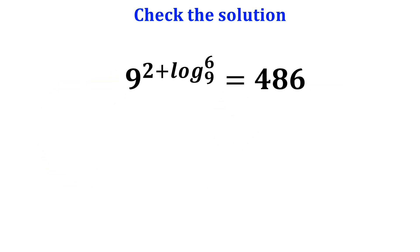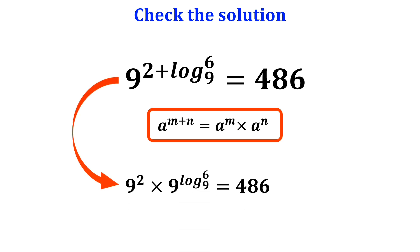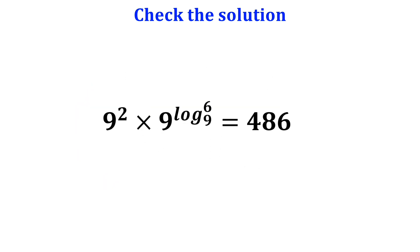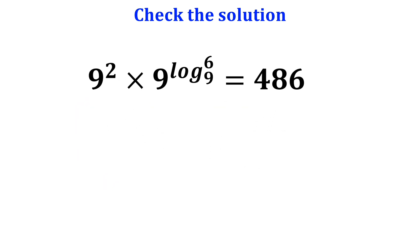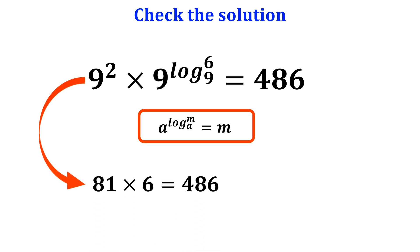According to the rules of exponents, a to the power of m plus n equals a to the power of m times a to the power of n. So this simplifies to 9 to the power of 2 times 9 to the power of log of 6 with base 9, which equals 486. Again, a to the power of log of m with base a equals m, so this becomes 81 times 6 which equals 486. And that confirms 486 equals 486.